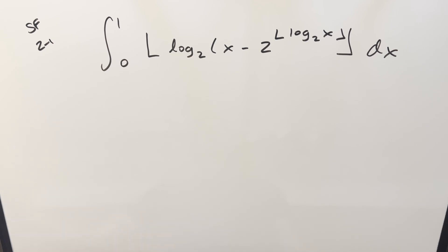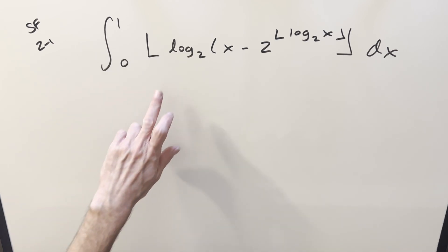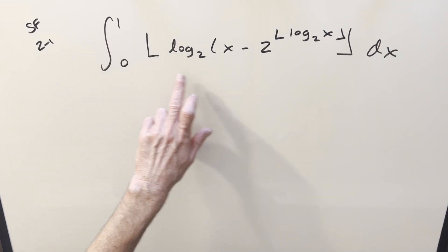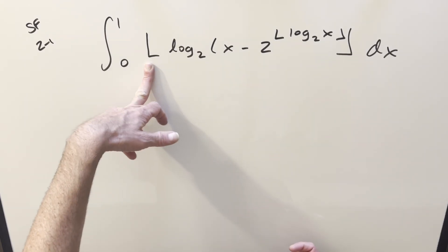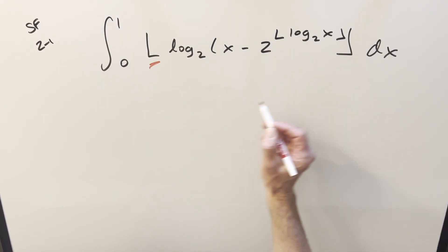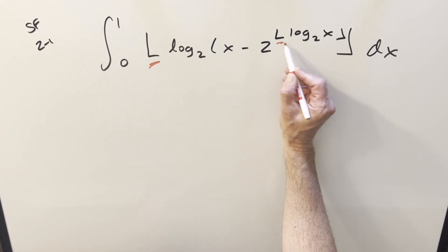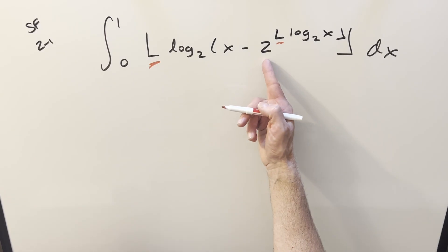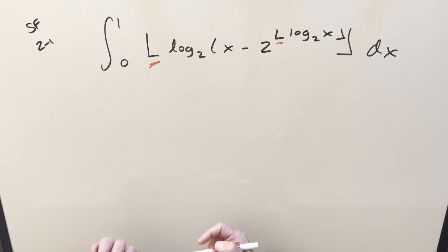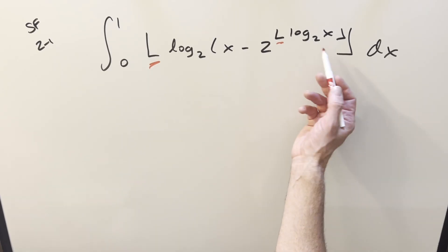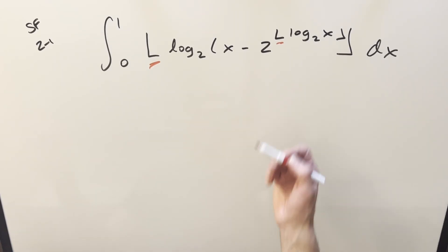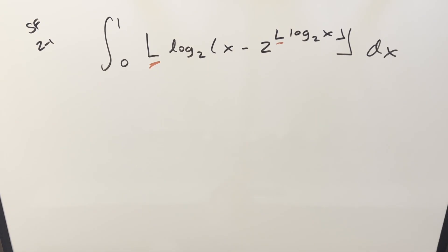We've got a pretty messy integral today from the MIT integration bee. The trouble with it is the fact that we've got nested floor functions — floor function all around it, and floor function on the exponent of the 2. And also the fact that we've got log base 2 in here, there's just kind of a lot of problems.